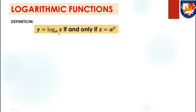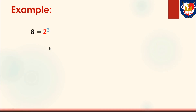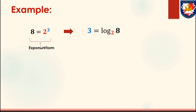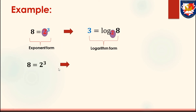Logarithmic functions. Definition: y equals logarithm of x to the base of a if and only if x equals a to the power of y, when x is positive, a is positive, and a is not 1. Example: 8 equals 2 to the power of 3; in logarithm form this becomes 3 equals logarithm of 8 to the base of 2. This is the exponent form and this is the logarithm form — in both, 2 is the base.